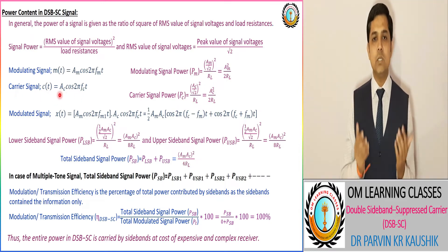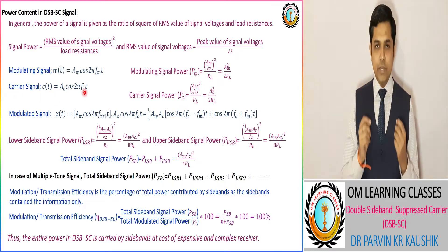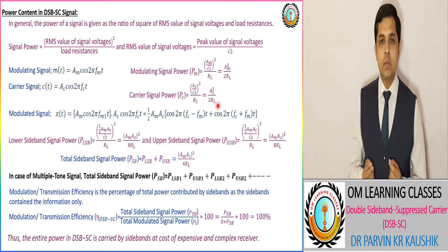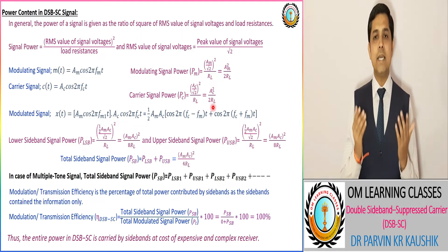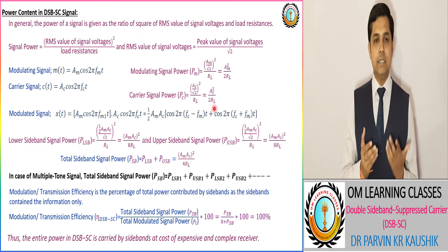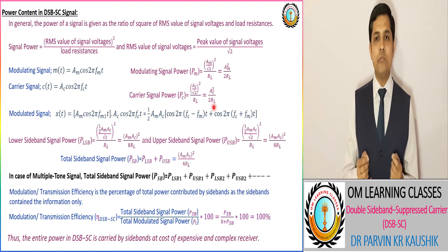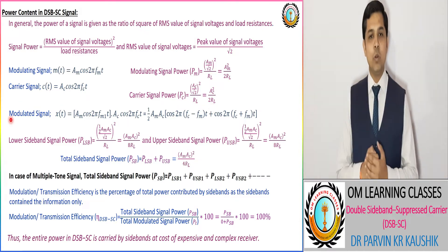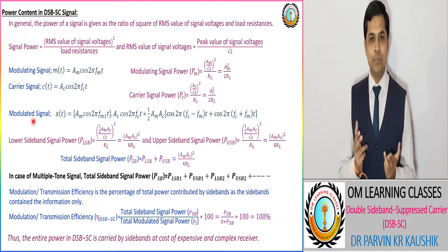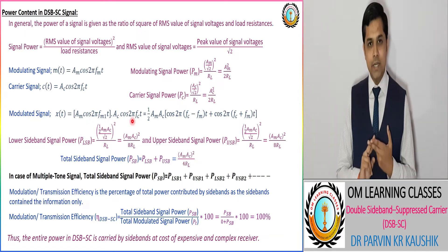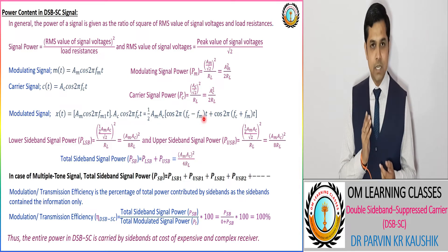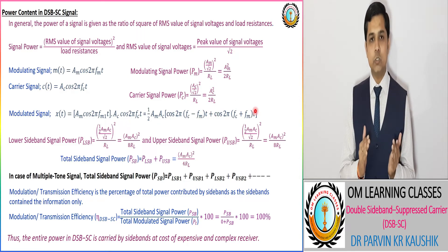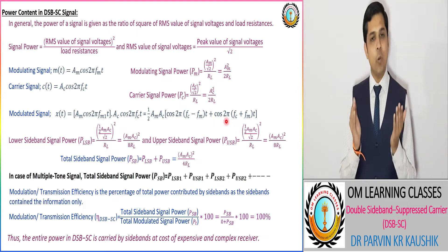Using this formula, the modulating signal power is the ratio of Am² to 2Rm. Similarly, for the carrier signal c(t) = Ac·cos(2πfc·t), using the same signal power formula, we get the carrier signal power equal to Ac²/(2Rm). As per our modulated DSB-C signal, we have a lower sideband corresponding to operating frequency fc − fm, and an upper sideband corresponding to fc + fm.